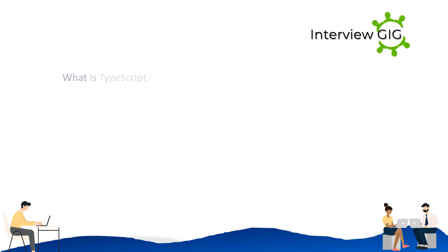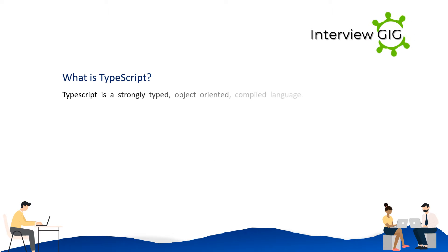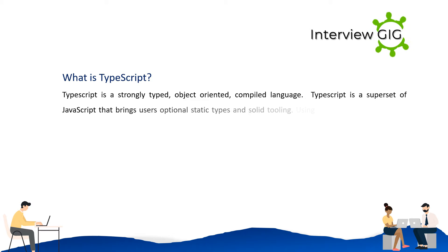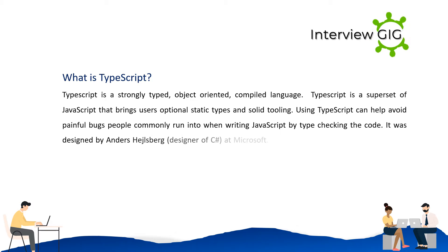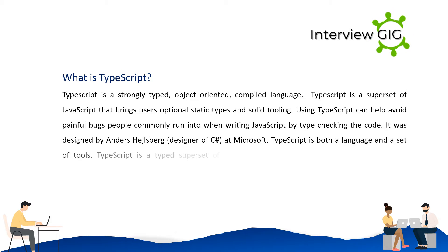What is TypeScript? TypeScript is a strongly typed, object-oriented, compiled language. It is a superset of JavaScript that brings users optional static types and solid tooling. Using TypeScript can help avoid painful bugs people commonly run into when writing JavaScript by type-checking the code. It was designed by Anders Hejlsberg, designer of C#, at Microsoft.